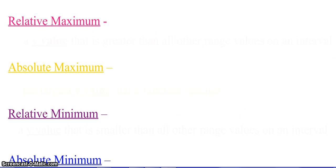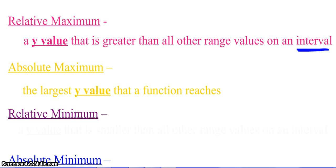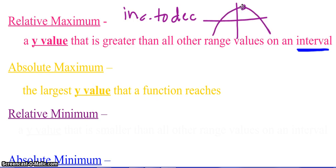So we've got this concept of maximums and minimums — it connects with our increasing and decreasing. A maximum is a y value that is greater than all other range values on an interval. This 'on an interval' is important — you're talking about one little piece of your graph, so relative to everything else around it, it is higher. The absolute maximum, then, is the biggest one in comparison with all of the maximums you've identified — by definition, absolute can only have one. Maximums occur when you switch from increasing to decreasing, so our function was increasing, now it's decreasing — this creates some sort of a maximum.